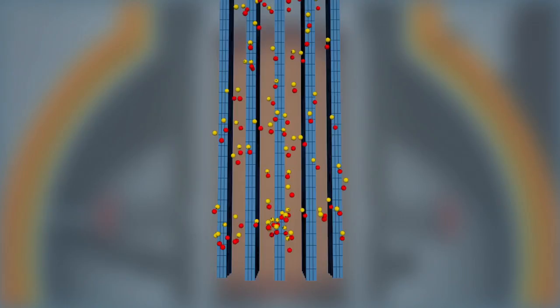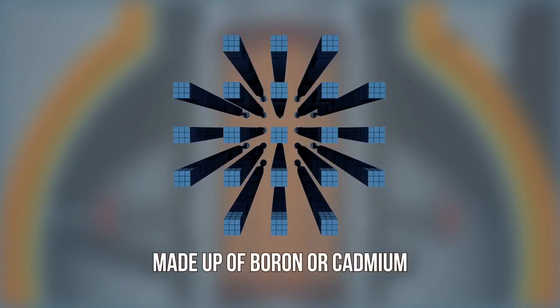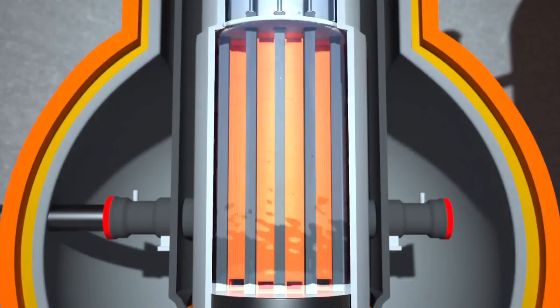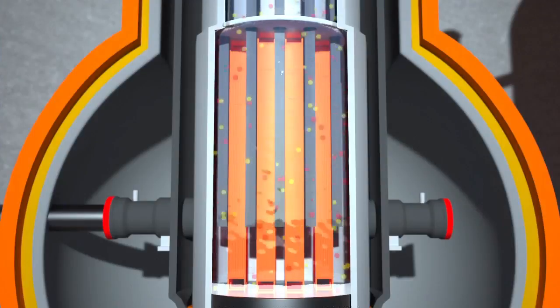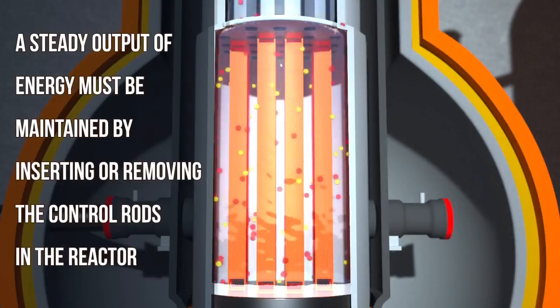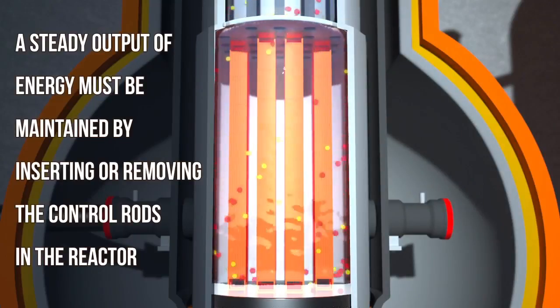Control rods work by absorbing the excess or spare neutrons in the moderator to prevent any further fission reactions. These rods are usually made up of boron or cadmium. To increase the rate of reaction, the control rods can be removed from the moderator. A steady output of energy must be maintained by inserting or removing the control rods in the reactor.